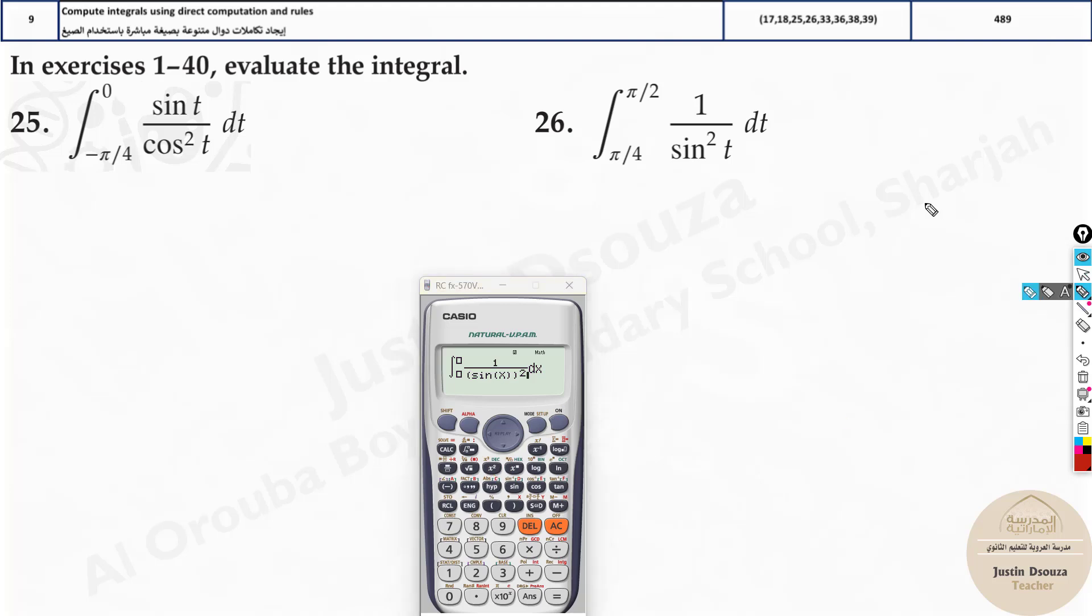Sine squared t is equal to sine t the whole square. So that is what we did, because we cannot put the sine squared t in the calculator. But if it was sine t squared, then it's a different thing altogether. You need to do sine t squared itself - sine, you put that t and square it. These both are not the same thing.